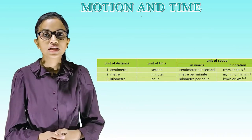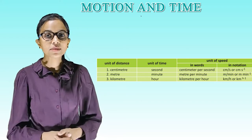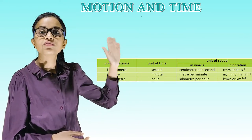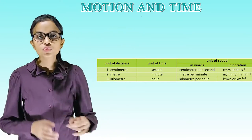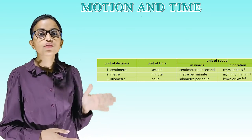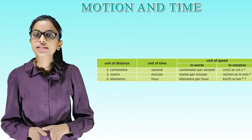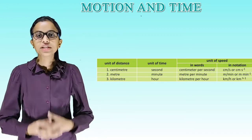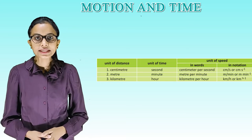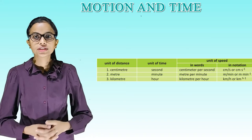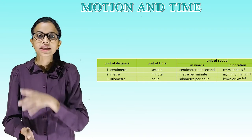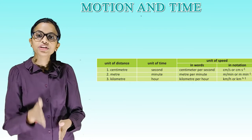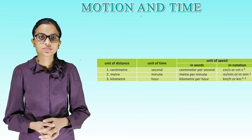So students, are you able to see the chart? This chart is showing the unit of time and unit of speed. Unit of distance, unit of time, unit of speed in words or in notation. First one is centimeter, unit of time second, unit of speed in words centimeter per second. In notation, that is CM slash S or we can also write it as centimeter per second. Second, meter, unit of time minute, unit of speed in words meter per minute. In notation, it is meter per minute, that is M slash MIN. Third one is kilometer, kilometer per hour, KM slash H.